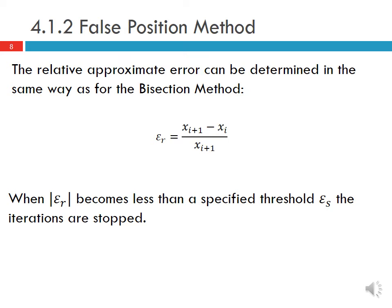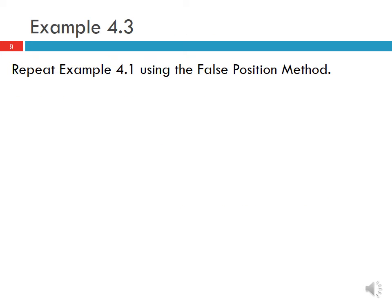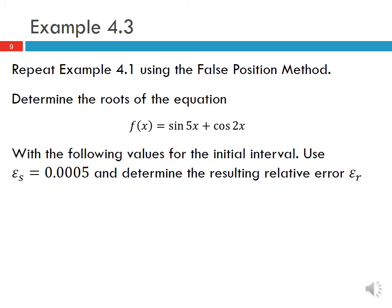When the absolute value of this approximate relative error becomes less than a specified threshold εs, then the iterations are stopped. We can see an example; basically we are going to repeat Example 4.1 using the false position method. Example 4.1 said that we wanted to determine the roots of this equation sin(5x) + cos(2x) with the following values for the initial interval and using a stopping criteria of εs = 0.0005.